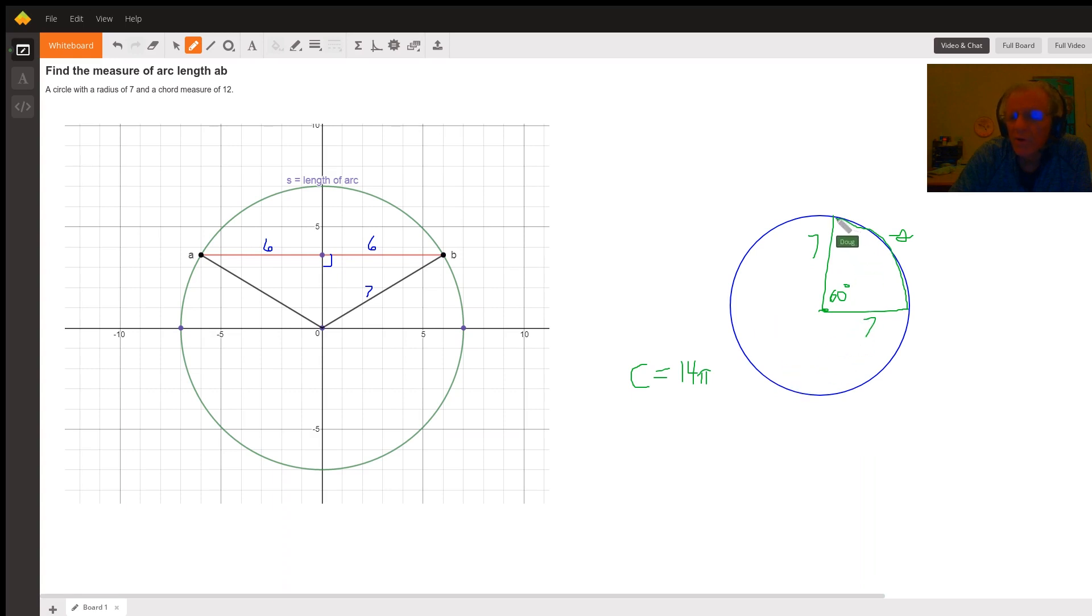But we only want a fraction of that total distance around the circle. What fraction? Well, 60 three-hundred-sixtieths. So the proportion that you can set up to solve for S in this problem is S is to 14 pi as 60 is to 360.